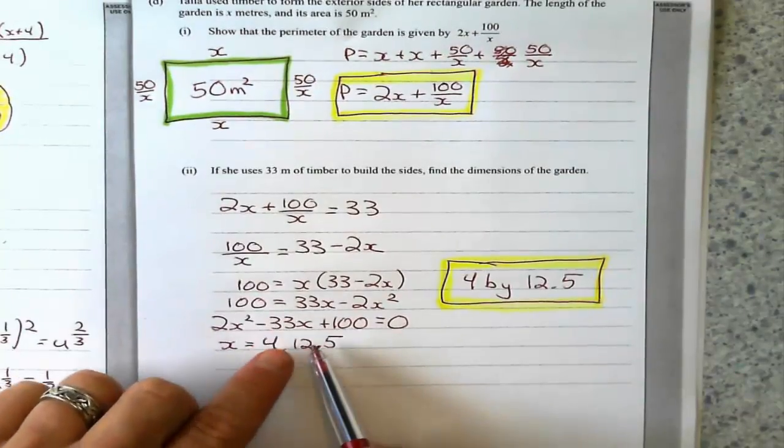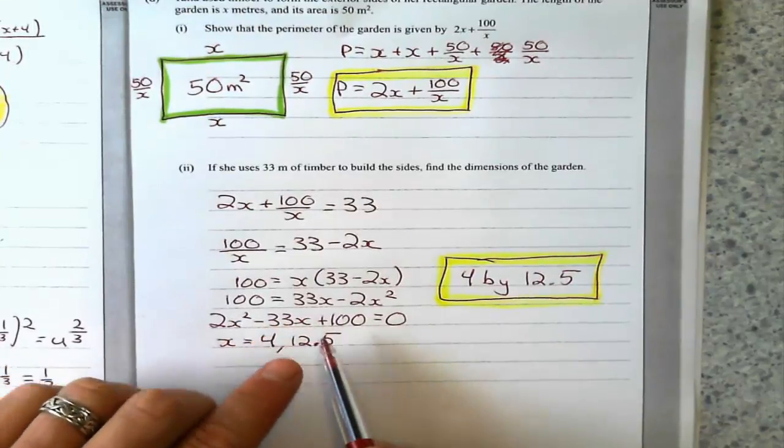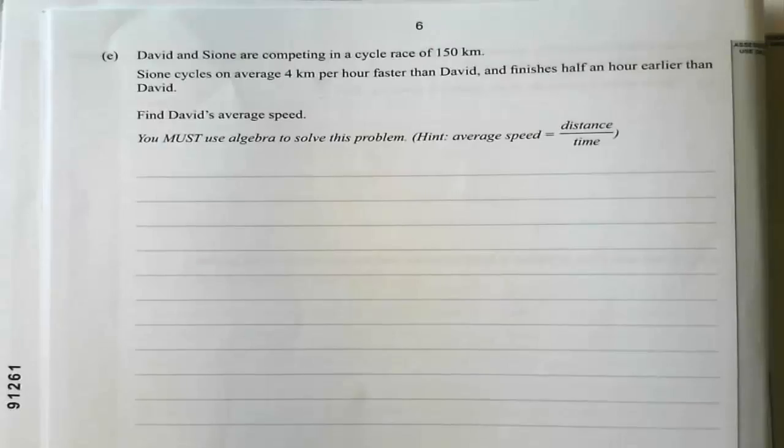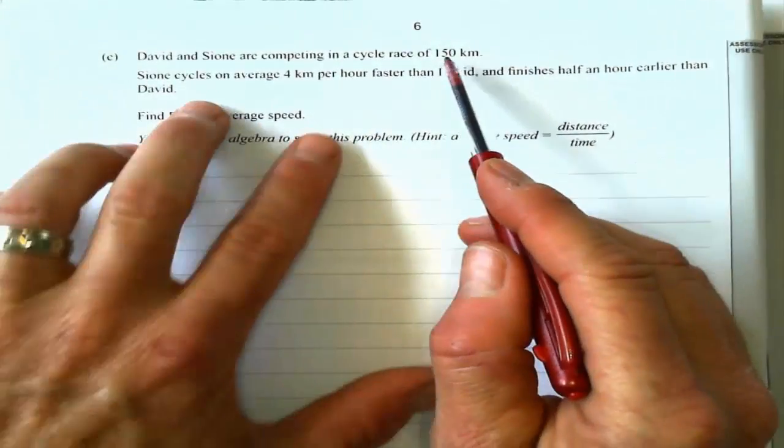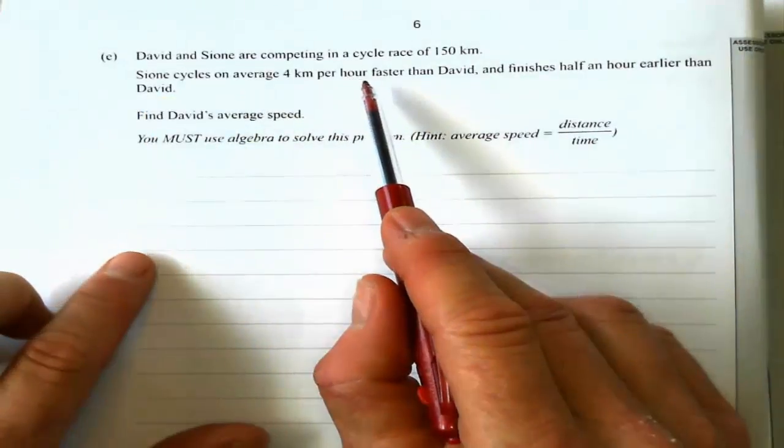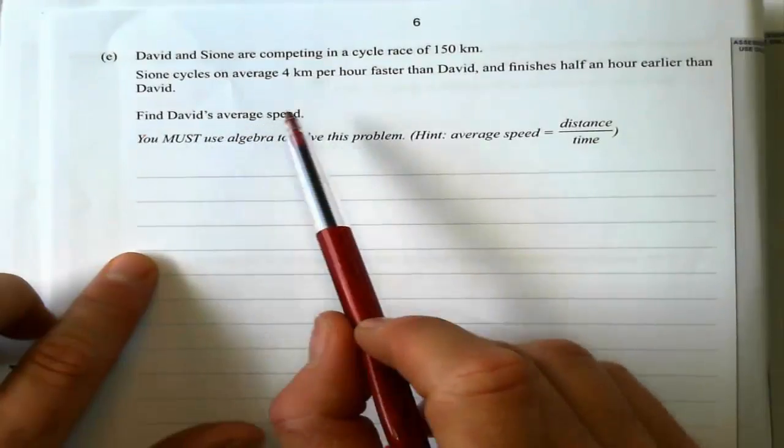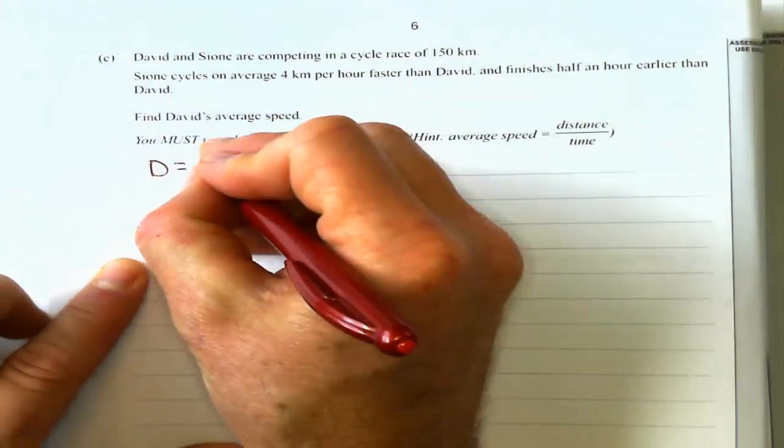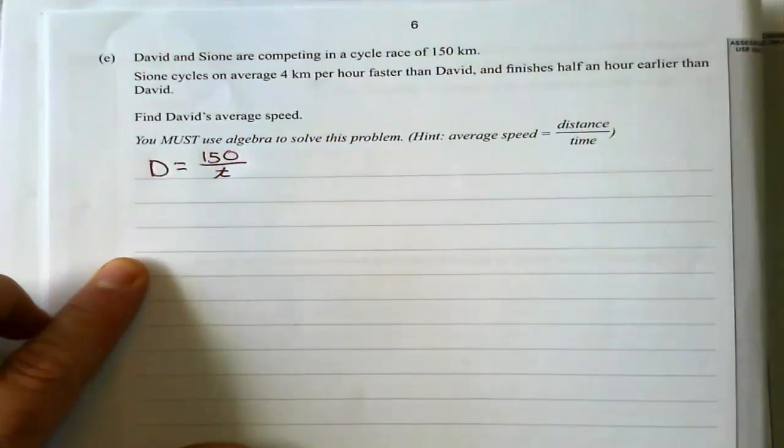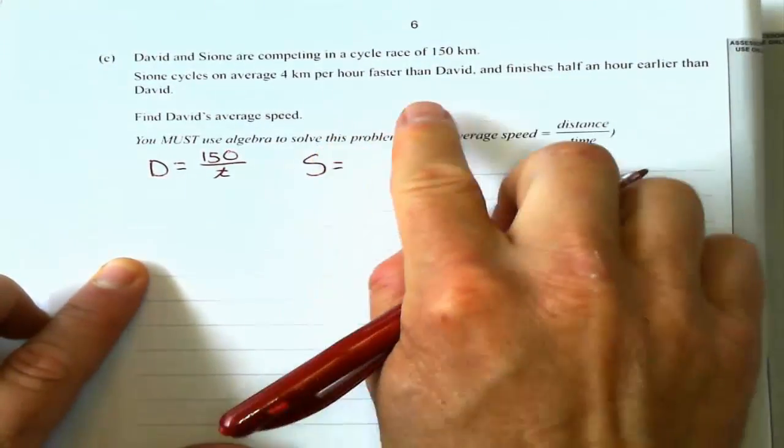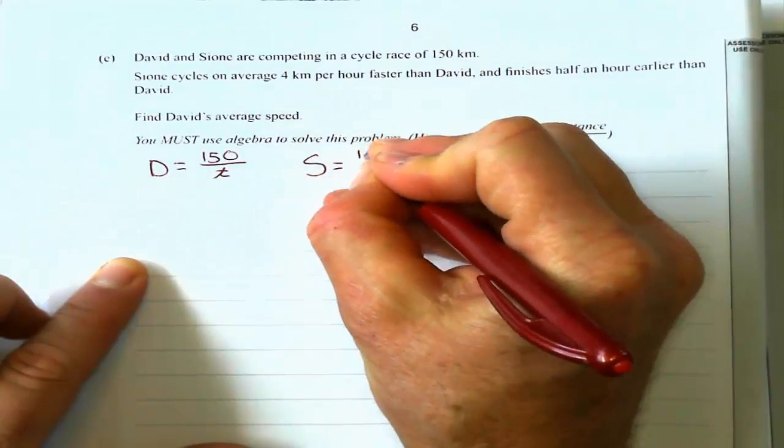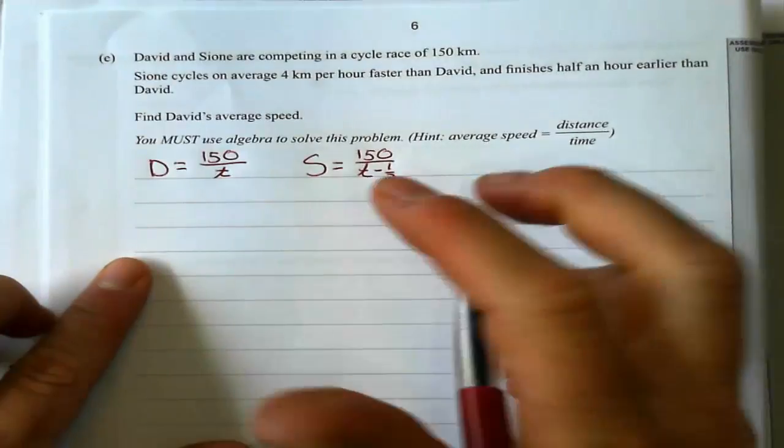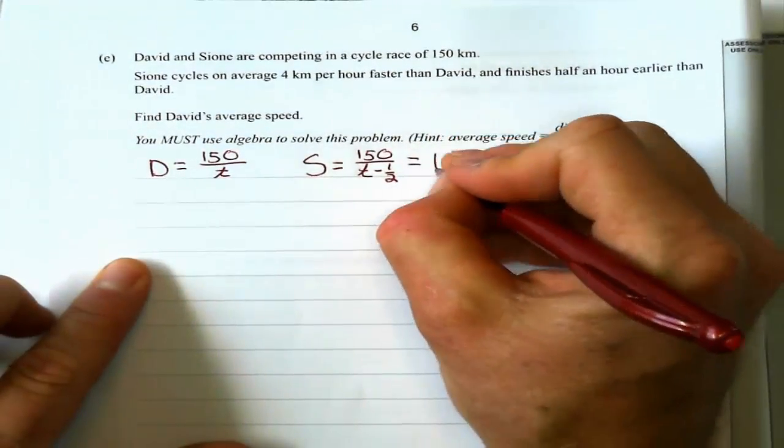On to the last problem, which is probably the hardest one. We've got two people, David and Sione, competing in a cycle race which is 150 km long. Sione cycles on average 4 kilometers per hour faster than David and finishes half an hour earlier than David. Find David's average speed. First of all, let's get some facts here. Average speed is total distance over total time. David's, they both do 150 km, but I don't know the time. So I'm just going to call that T. Sione's is half an hour earlier, so that means Sione's is 150 over (T minus 1/2). And this is the same as 4 kilometers faster than David, D plus 4.